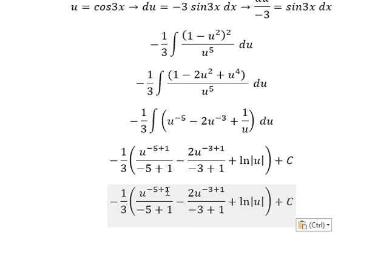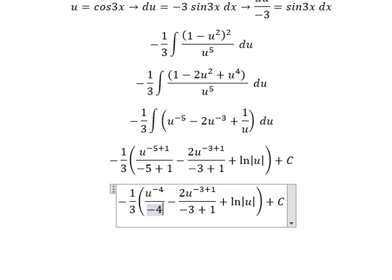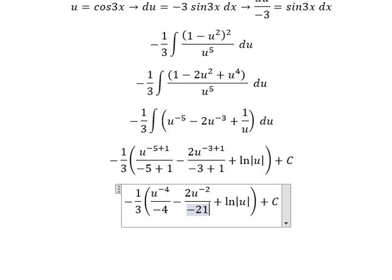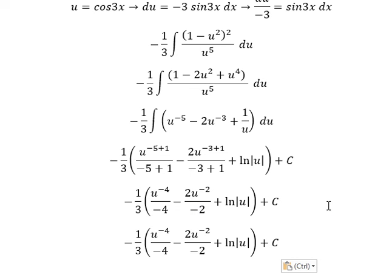This gives us negative 1/3 times (negative 4 in the denominator, and negative 2 here). Negative divided by negative, we simplify.